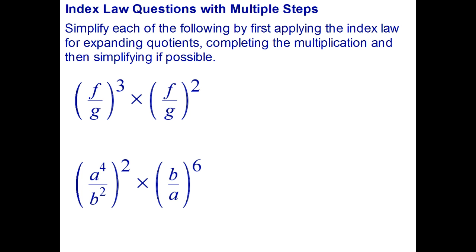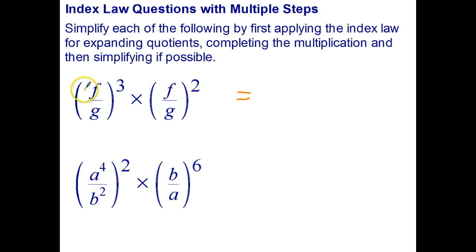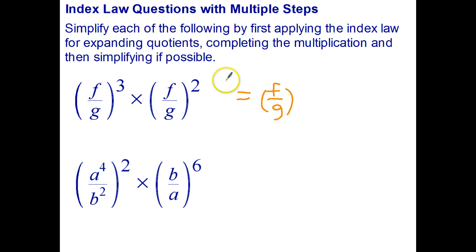Okay, let's see how you went. We're going to start by using index law number one to multiply two powers with the same base — to multiply two powers with the same base, add the indices. So this is index law number one. My base is a fraction, but that's okay. So that becomes (F over G) in brackets, all to the power of three plus two, which is five.